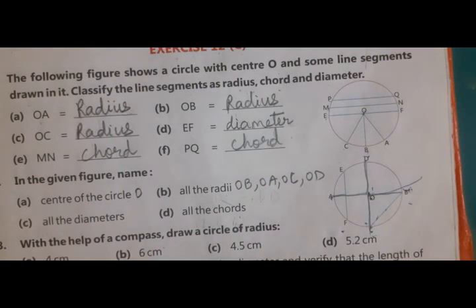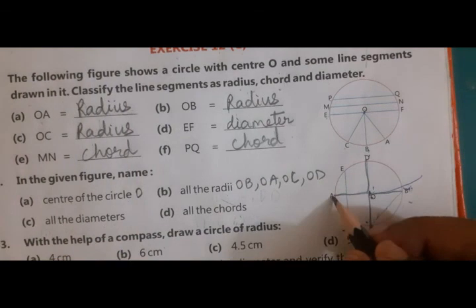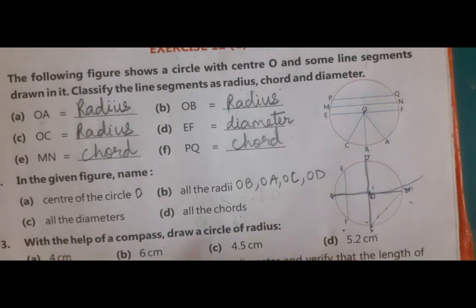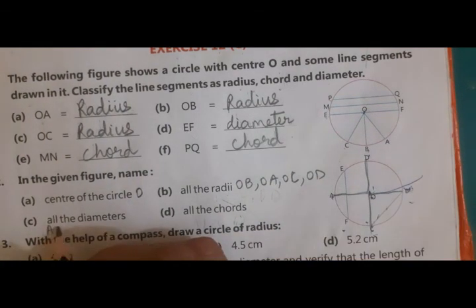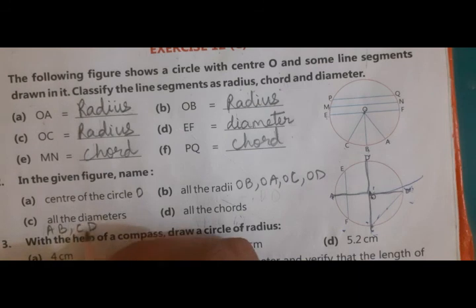All the diameters. Diameters will be from ear to ear. So diameter AB and diameter CD.